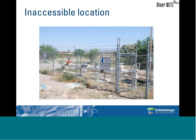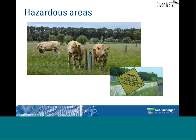Another example where the DiverNet system can be used is in areas with hazards such as alligators and bulls—but you can also think of dogs or the median of a highway.